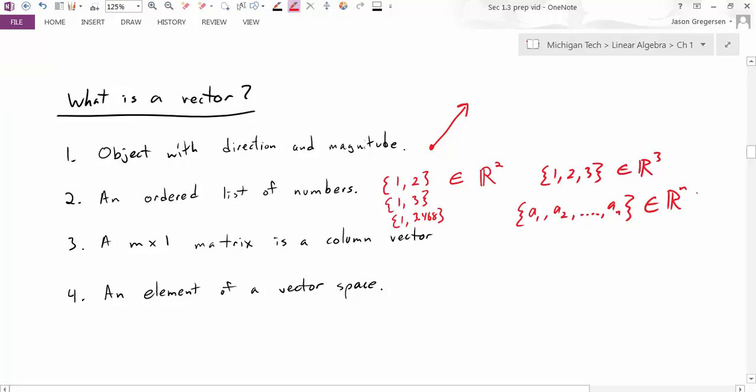Now the third way we can represent or think about vectors is we can say that an m by 1 matrix is a column vector. So if I think about a matrix with just one column, so for instance this column, that would be a column vector. I can think that also as a list of two numbers, just vertical instead of horizontal. And similarly, I could take the vector 1, 2, 3.